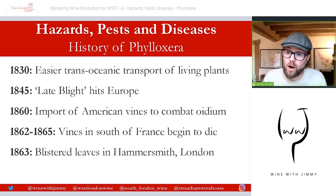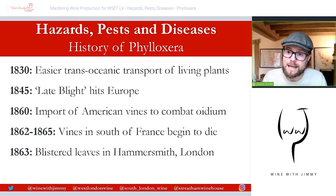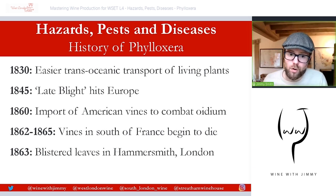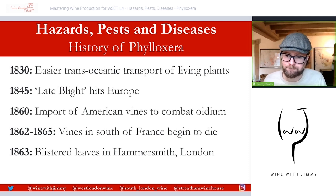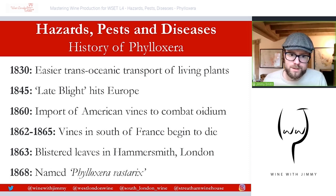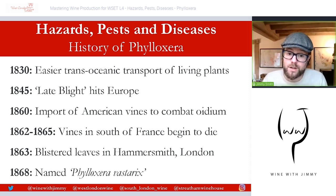Slightly before the French vines started to die, other parts of Europe began experiencing blistering of the leaves — later called galling of the leaves — noticed in a nursery in Hammersmith, West London. By 1867, the same was appearing in vineyards around Cheshire and even Ireland. Meanwhile, the spread in the south of France, which began in the Gard département, was spreading across most of the south and becoming a very worrisome issue.